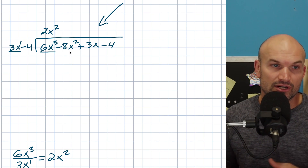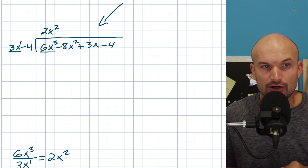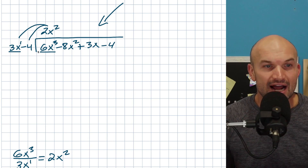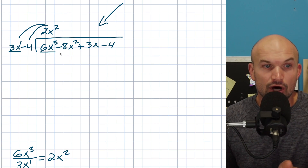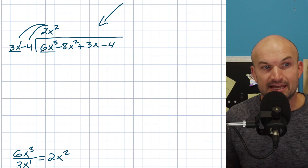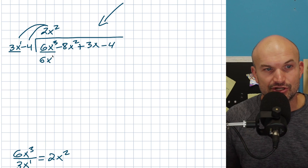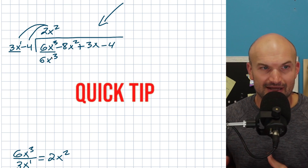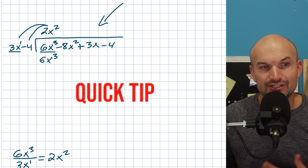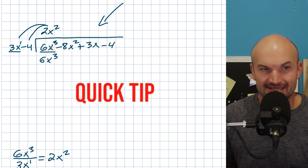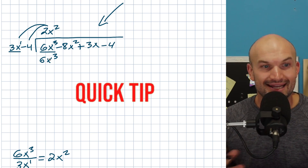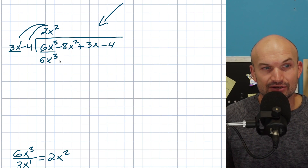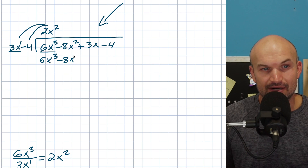Next, take this first term of our quotient and multiply it by both terms of our divisor, then write that product right below our dividend. 2x² times 3x gives 6x³. Quick tip: if you did the division correctly, you should get the exact same leading term — 6x³ here matches, confirming the division was correct. Then 2x² times negative 4 gives negative 8x².